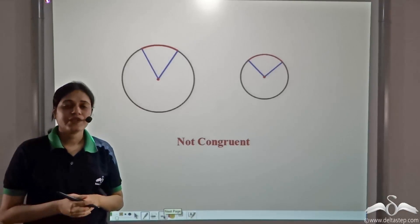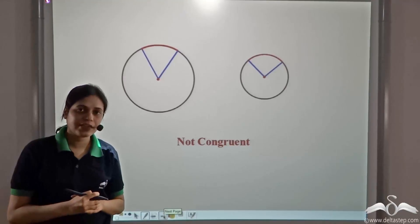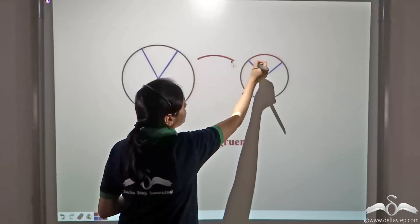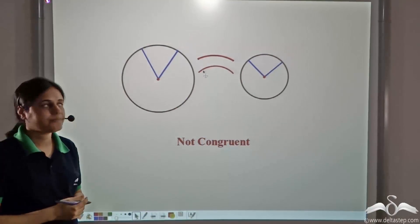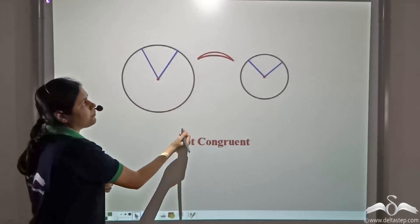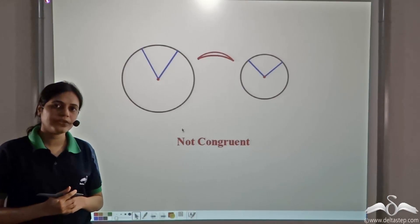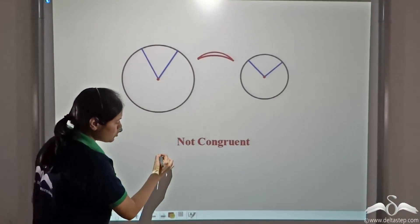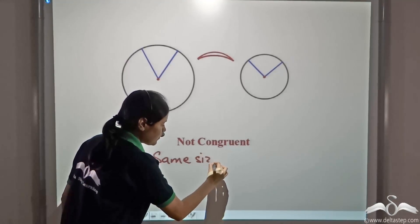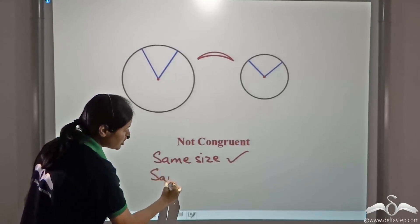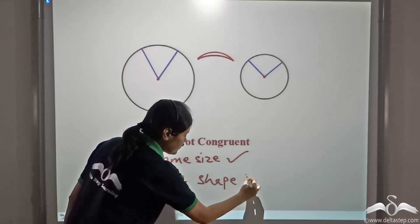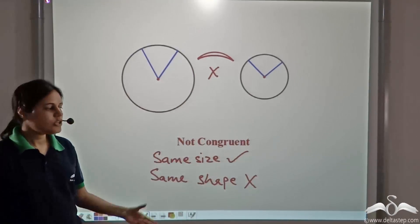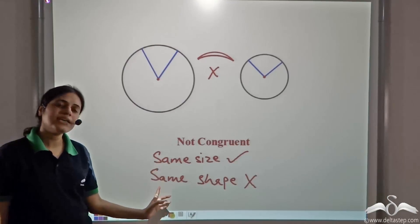Now, talking of arc length: even if two arcs are of the same length, they may not be congruent. We can see that these two arcs are of the same length, but when we check whether they overlap each other, they clearly do not. Although they are of the same size, they are not of the same shape. For congruency, we need to ensure both same size and same shape.